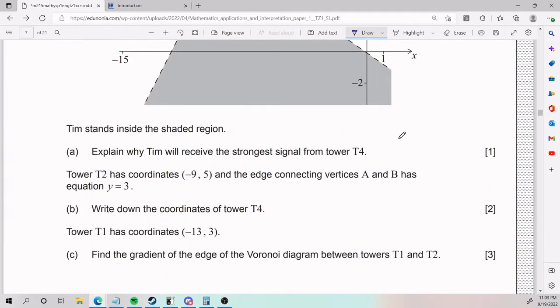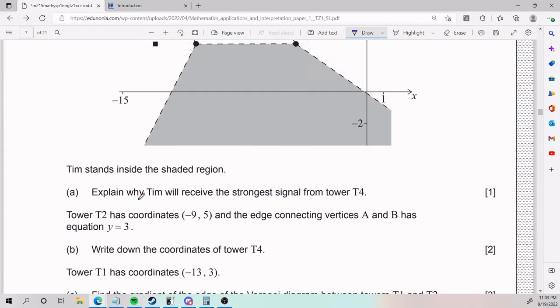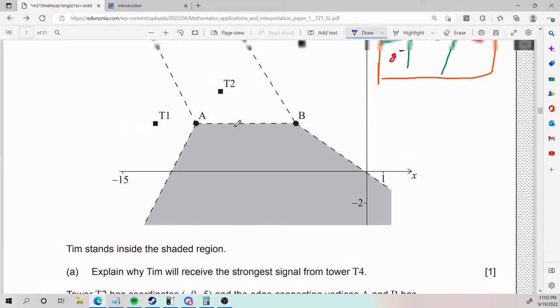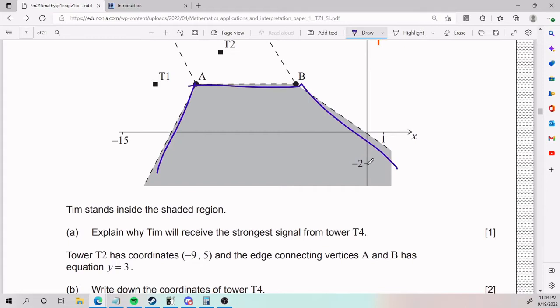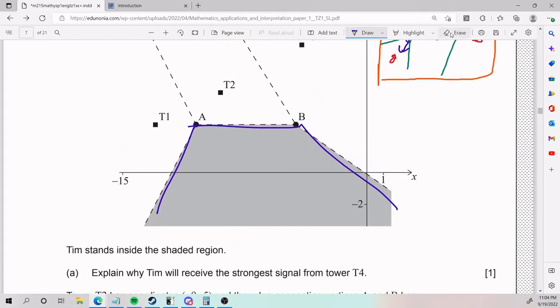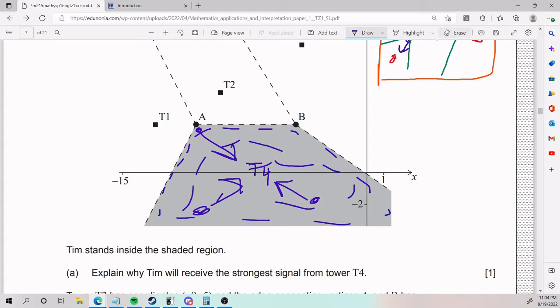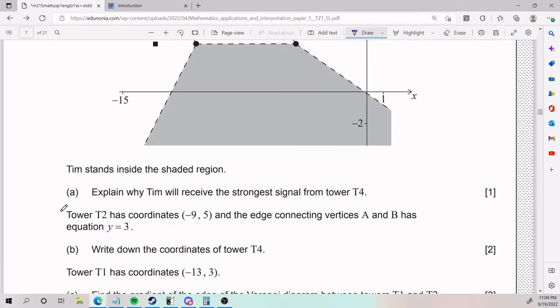So if Tim is inside the shaded region, and the tower T4 is somewhere in here, well, Tim will receive the strongest signal from the tower T4 because no matter where he stands in the shaded region, whether it's here, or there, or there, wherever T4 is, Tim will be closest to T4 no matter what. Because in the shaded region, all of these dots, regardless of where they are, are closest to T4 anyway. So that is the answer for part A.